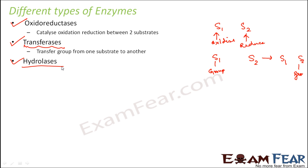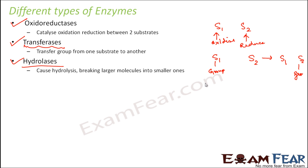Next are hydrolases. They help in the process of hydrolysis — breaking larger molecules into smaller ones. Hydrolysis involves breaking peptide bonds or glycosidic bonds. For example, maltose breaks down to form glucose, and the enzyme playing the role is maltase. Maltase is a hydrolase because it helps in hydrolysis. Most digestive enzymes are examples of hydrolases.